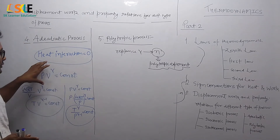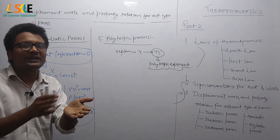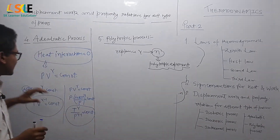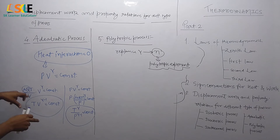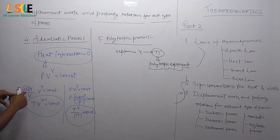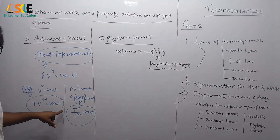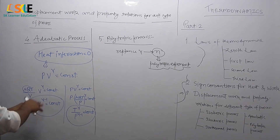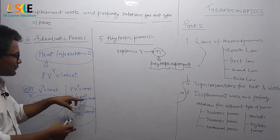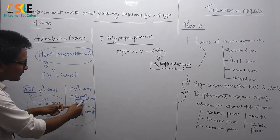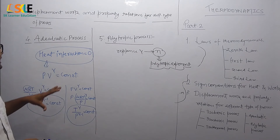For the adiabatic process, there is no heat interaction. The property relation is PV^γ = constant. From this property relation, we can also derive relations in terms of temperature and volume: T·V^(γ−1) = constant, and T^γ / P^(γ−1) = constant. These are the two property relations used in the adiabatic process. The work done for the adiabatic process is W = ∫p·dV, evaluated using these relations.